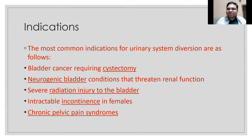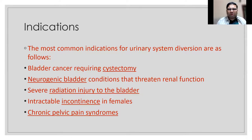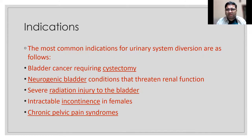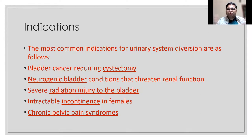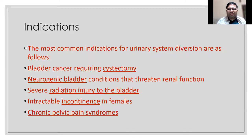The most common indication is muscle invasive bladder cancers. There are also neurologic conditions, especially scarring tuberculosis causing a thimble bladder, and radiation injuries - post-radiation cystitis causing severe intractable bleeding. When all medications and angioembolization fail, you have to go for a salvage procedure. Pain and intractable incontinence are also indications.